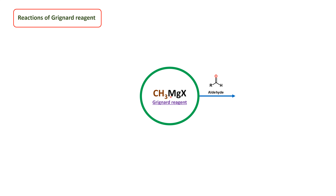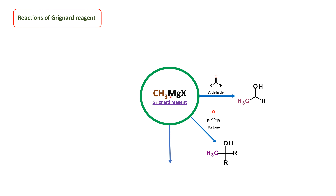You can use this Grignard reagent to get secondary alcohol from aldehyde. You can also use this to get tertiary alcohol from the ketone.